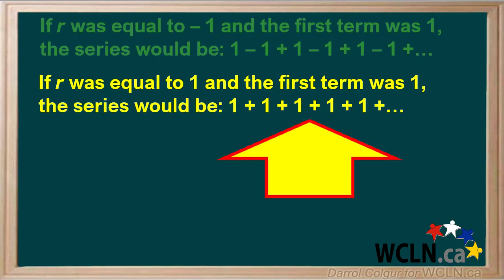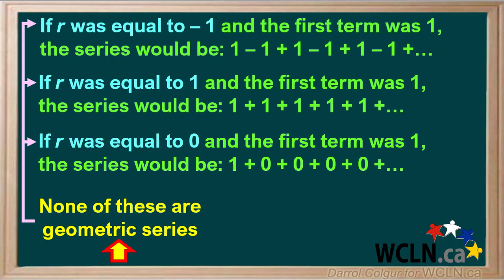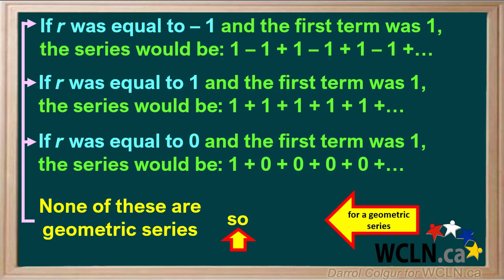Now if R was equal to 1 and the first term is 1, the series would be 1 plus 1 plus 1, etc. Again, this is not a geometric series, so R cannot be equal to 1. If R was equal to 0 and the first term was 1, the series would be 1 plus 0 plus 0 plus 0, etc. This is not a geometric series — it is just 1 followed by terms that are all 0s. None of these are geometric series, so for a geometric series, R cannot be equal to negative 1, 1, or 0.